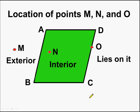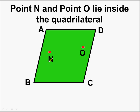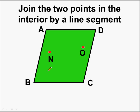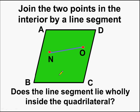So basically we saw three regions: interior, exterior, or on the quadrilateral itself. Now here we have two points, point N and point O, both of which lie inside the quadrilateral — that is, their location is interior of this quadrilateral. Now let us join these two points, which are inside the quadrilateral, by a line segment. Does this line lie wholly inside the quadrilateral? Yes. But is it always true? Can we say that the line segment will lie wholly inside the quadrilateral if it is joining two interior points?